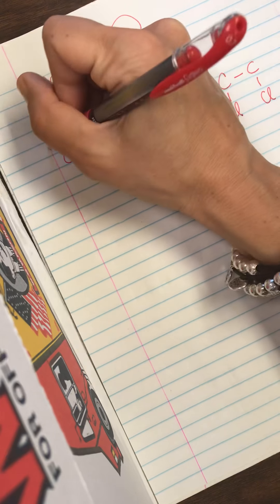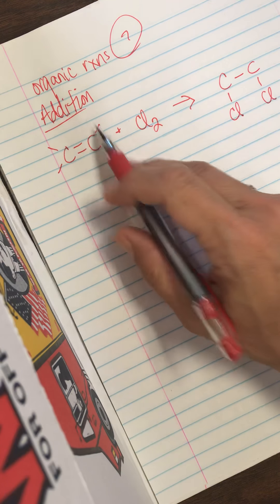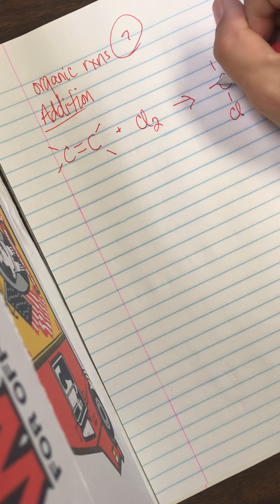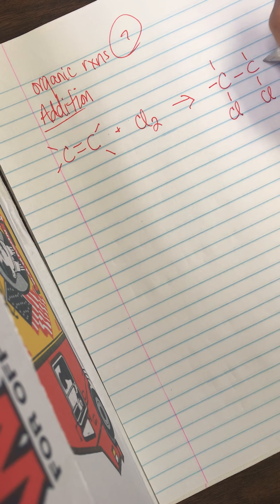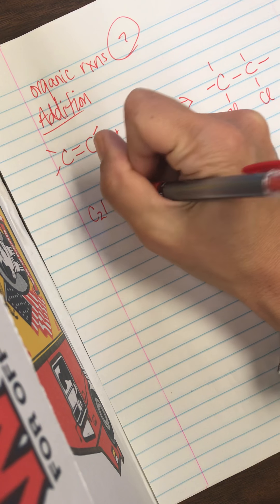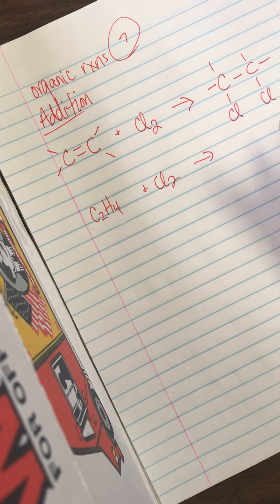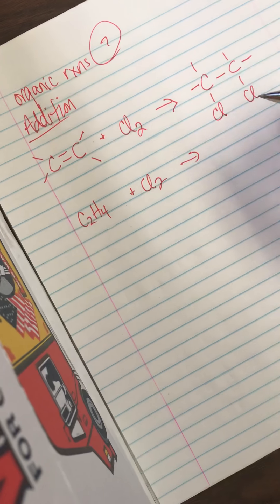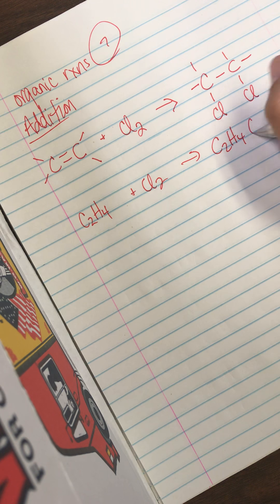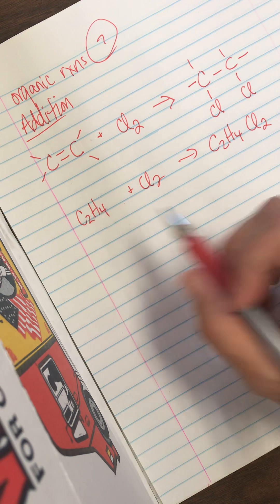This would have already had two H's here and two H's here to complete that four bond rule. And it still has the two H's there and the two H's there. So we started off with C2H4 plus Cl2. And then you just add them all together. They are all in one molecule now. So C2H4Cl2. It is no longer unsaturated though.